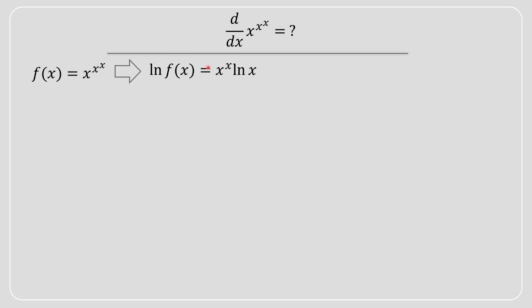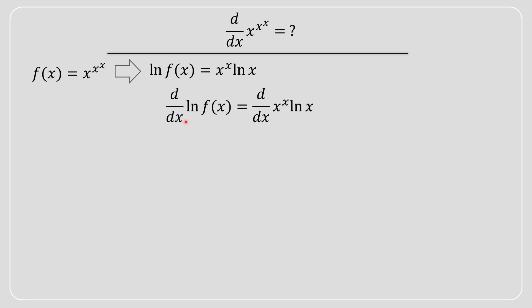We can solve it by applying the laws of logarithms on both sides — basically taking ln of both sides. Since we have an exponent of x to the power of x, we can move it out as a multiplication in front of the ln. That makes it a lot easier to take the derivative, as you'll see in a moment.